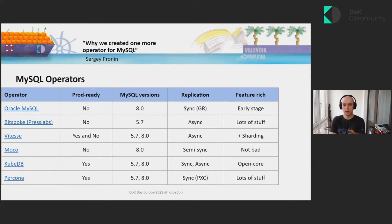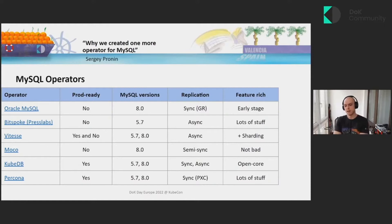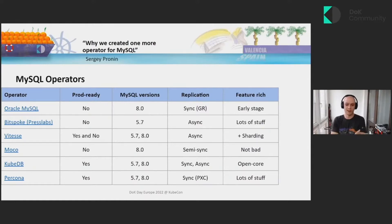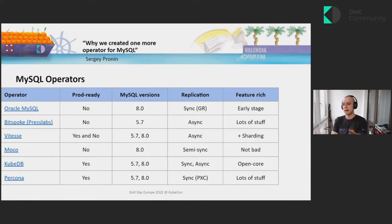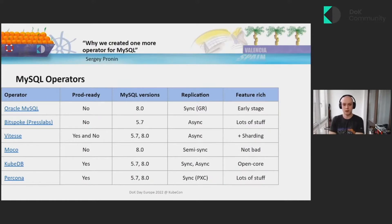A year ago, they announced a new MySQL operator — basically at Percona Live as well. But it was kind of weird, because they stated it's also not production-ready. It's going to be in beta, it supports only MySQL version 8, it works only with group replication, and doesn't have any additional features. Then after a few months of silence, they said they're dropping this operator and starting a new one for MySQL — the third one. Its state is exactly the same: not production-ready, early-stage, no backups. I really love what they did from an architecture perspective, but it's still not production-ready, and I don't know if they even have any plans to make it a viable option.